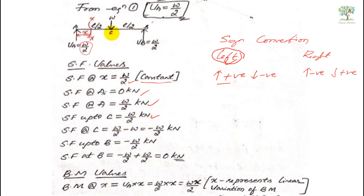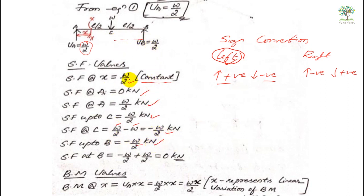At point C, the point load W acts downward, which is negative. So the shear force becomes plus W/2 minus W, which equals minus W/2. Between C and B there are no forces, so the shear force remains constant at minus W/2. At point B, VB acts upward, so minus W/2 plus W/2 equals zero. Those are the shear force values.